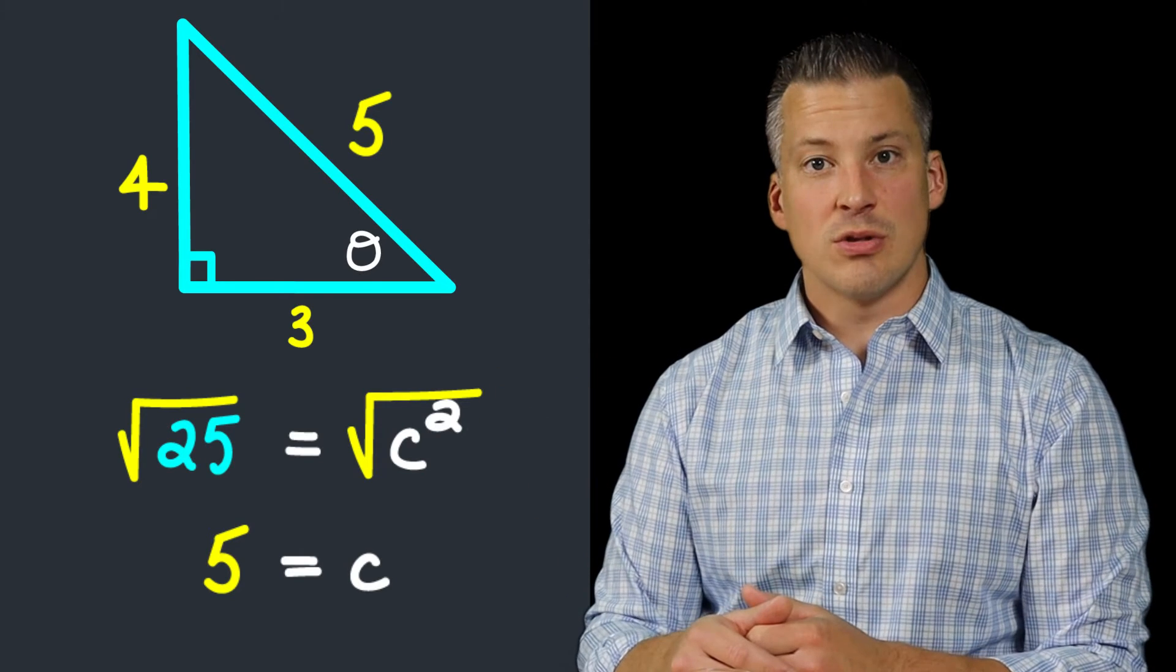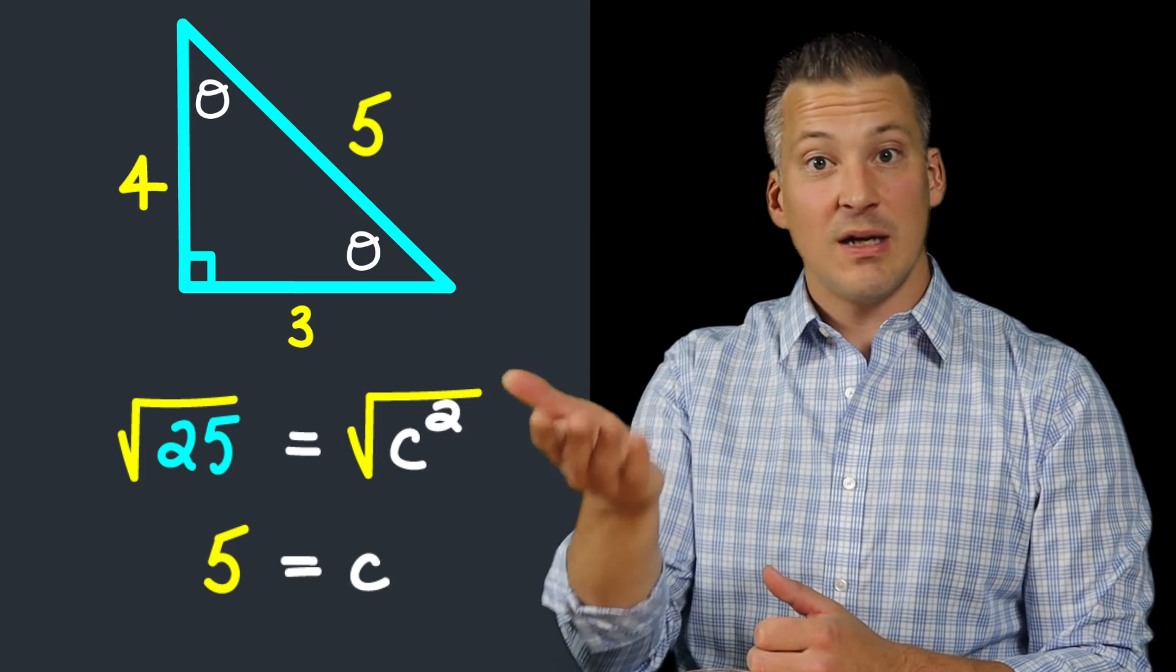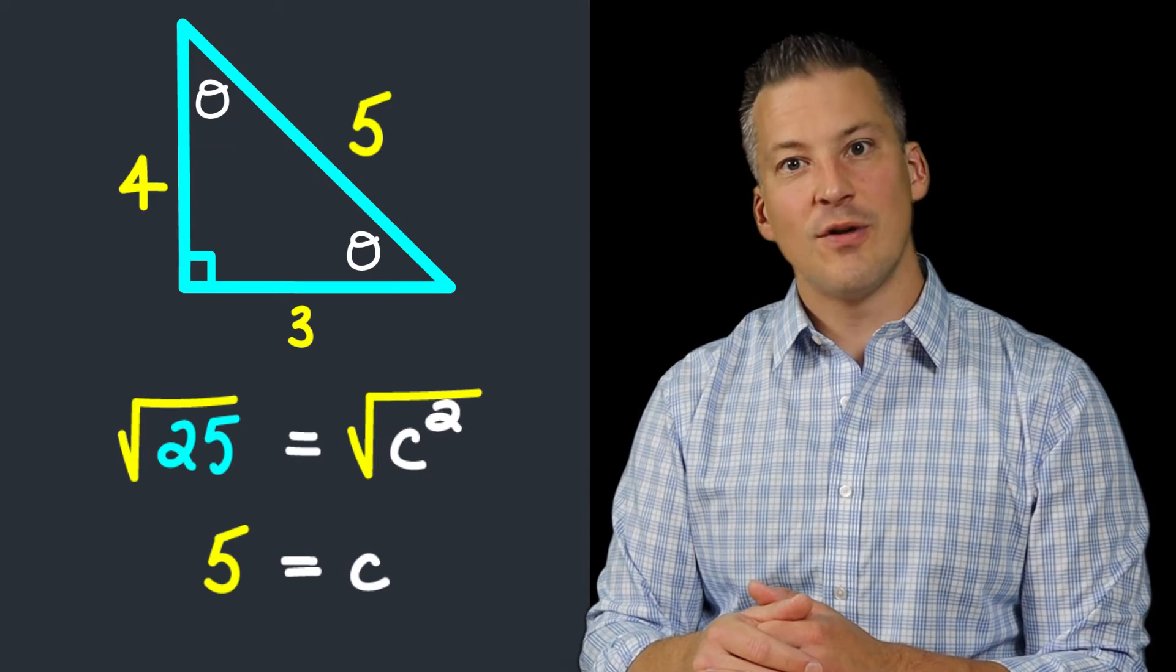How would we find those measures of those angles that are missing inside of the right triangle? Leave a comment below, and I'll let you know if you're right.